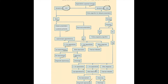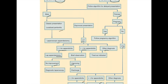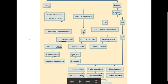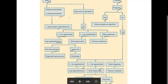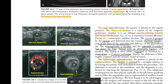For the approach to suspected appendicitis with symptoms less than 48 hours: in females, first rule out pregnancy — if pregnant, follow the pregnancy algorithm; if not, proceed with CT. If CT is positive, perform laparoscopic appendectomy; if negative, observe. If no improvement, perform diagnostic laparoscopy; if improving, discharge. In males with classical presentation and localized peritonitis, proceed directly to laparoscopic appendectomy. For equivocal presentations, perform CT; if positive, lap appendectomy; if negative, observe and manage accordingly.